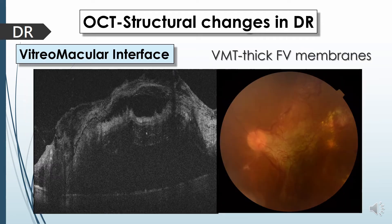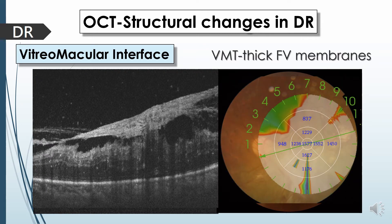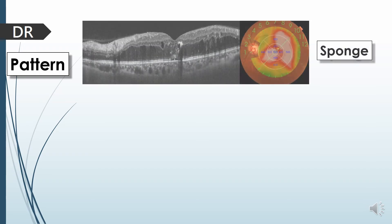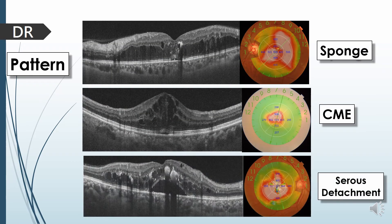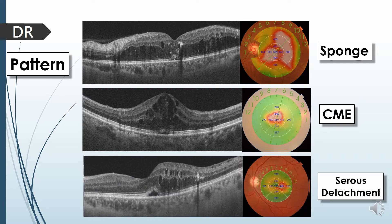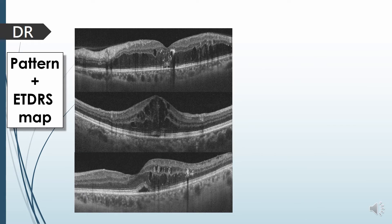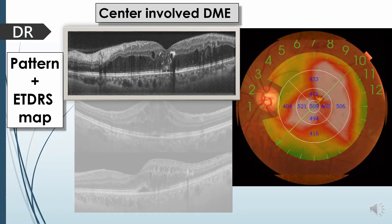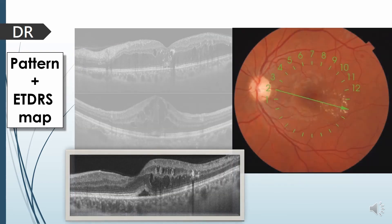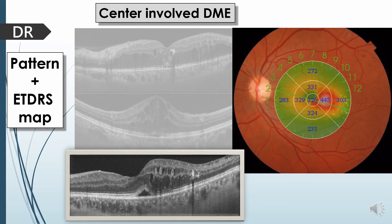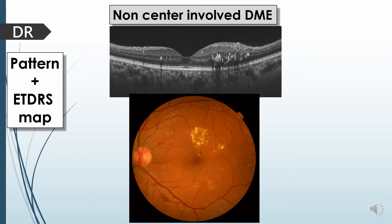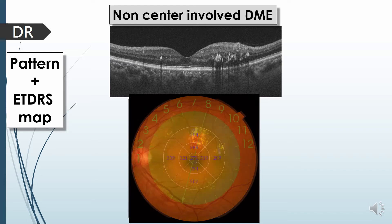These membranes may be thick enough to cause distortion of the whole vitreo-macular interface in long-standing PDR cases. According to OCT, we can classify different DME patterns into sponge or diffuse thickening, cystoid macular edema, serous detachment, or a combination of cysts and serous detachment. A more clinically relevant classification combines pattern with the ETDRS map, classifying DME into center-involved (sponge, cystoid, or with serous detachment) and non-center-involved, which is focal macular edema that does not involve the central 1 mm of the ETDRS map.